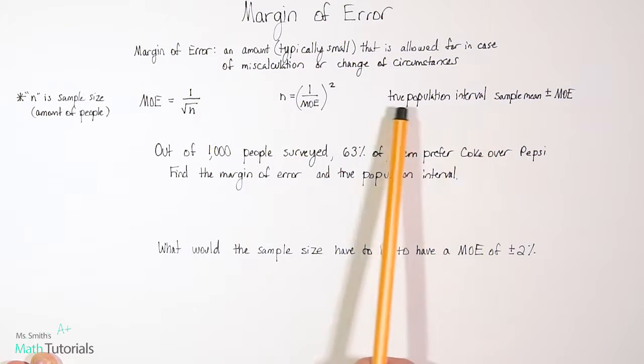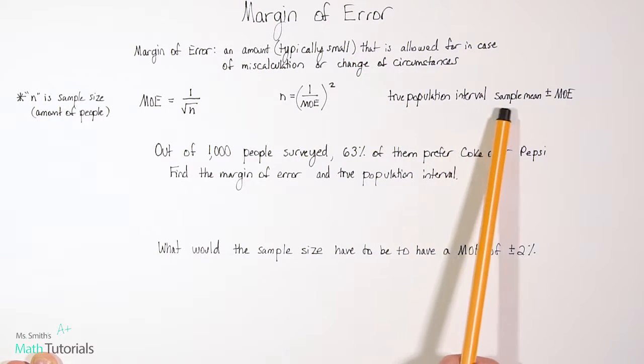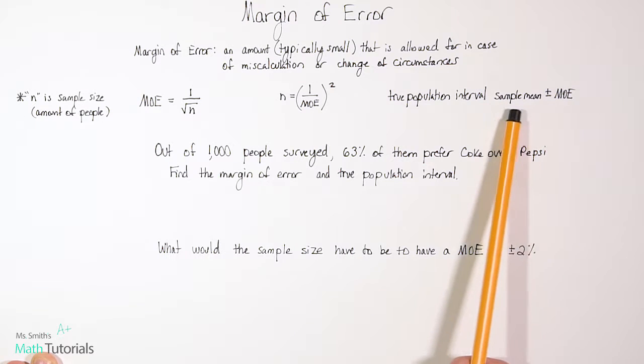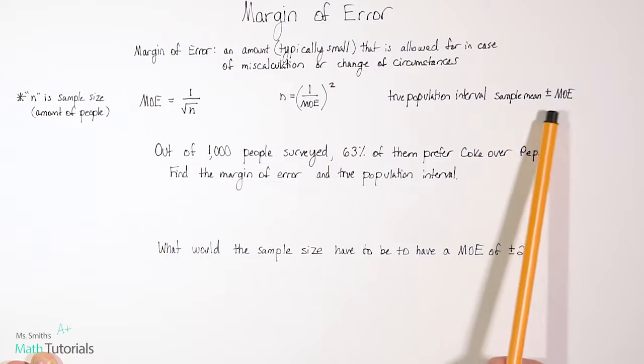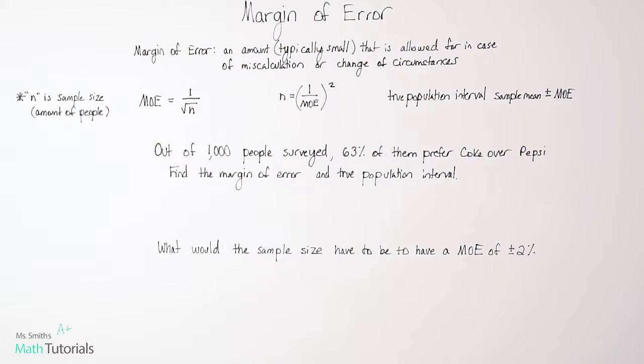And another important thing to note is the true population interval. So that is when they ask you to find the true population interval, they're asking for the sample mean. So our final percent plus or minus the margin of error. I think that'll make a little more sense once we actually see it in action. So let's just dive right into an example.